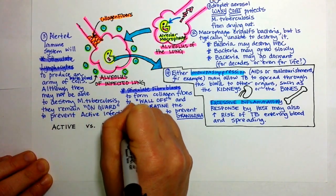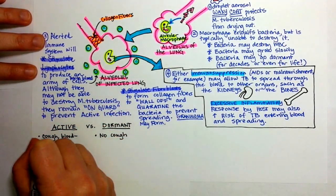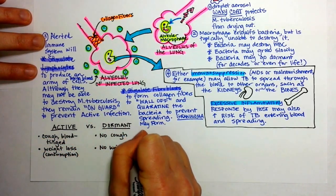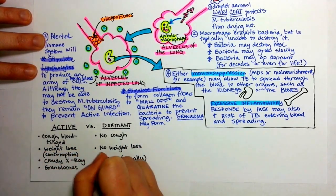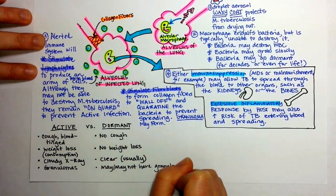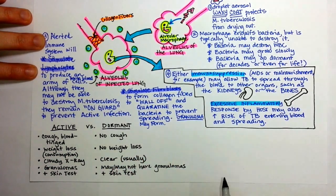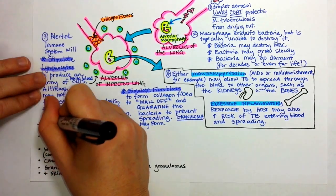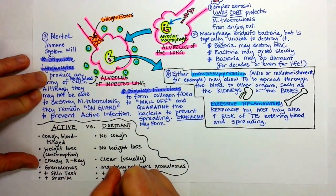Let's compare active and dormant TB. If a person has active TB, they will have a blood-tinged cough and a fever — dormant TB will not cause these. With active TB, they'll be losing weight; in fact, it even used to be called consumption. They will have granulomas in their lungs, and the lung will look cloudy on imaging. Dormant TB does not cause these findings, and it's not contagious.